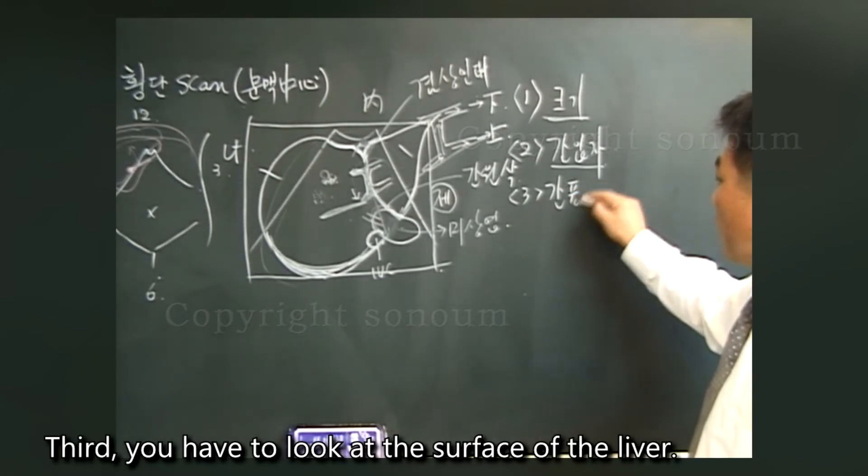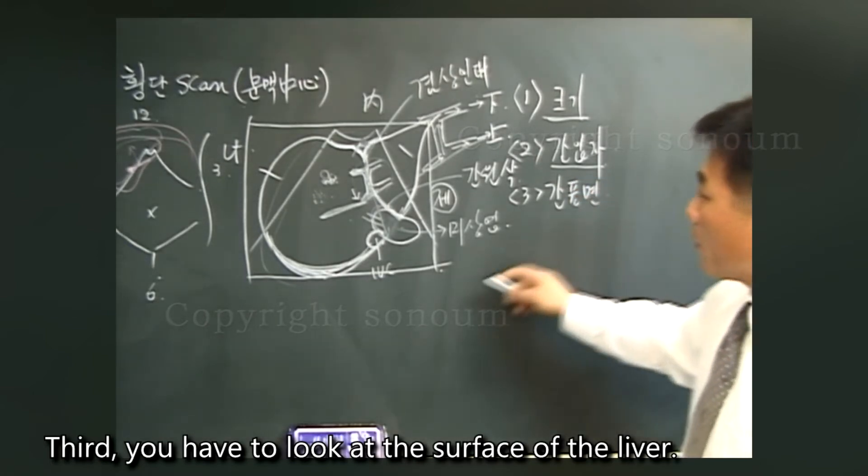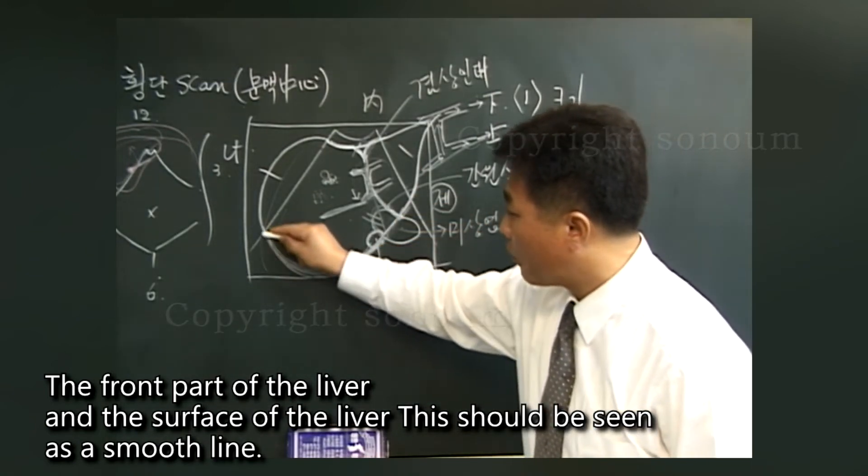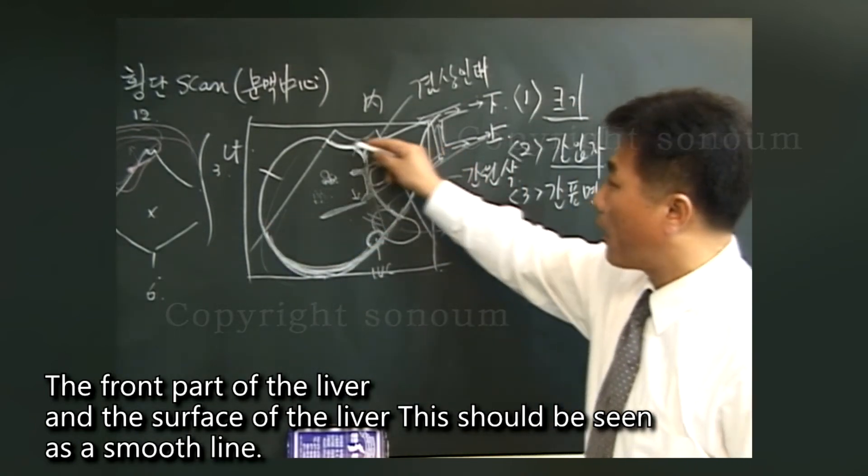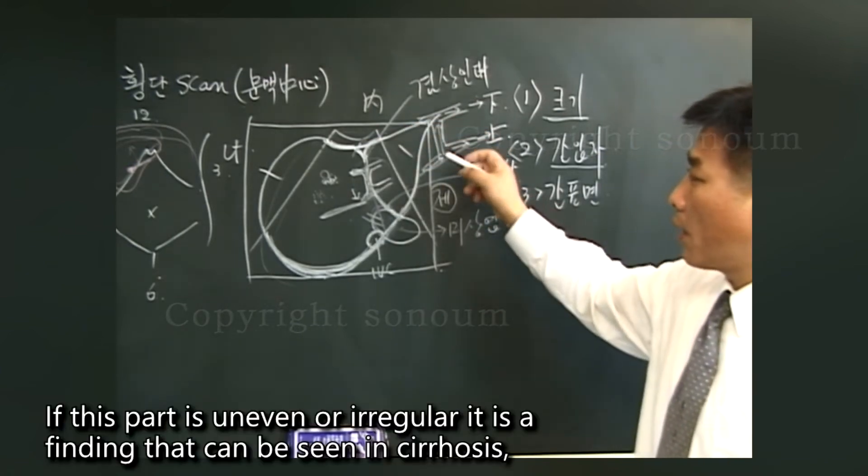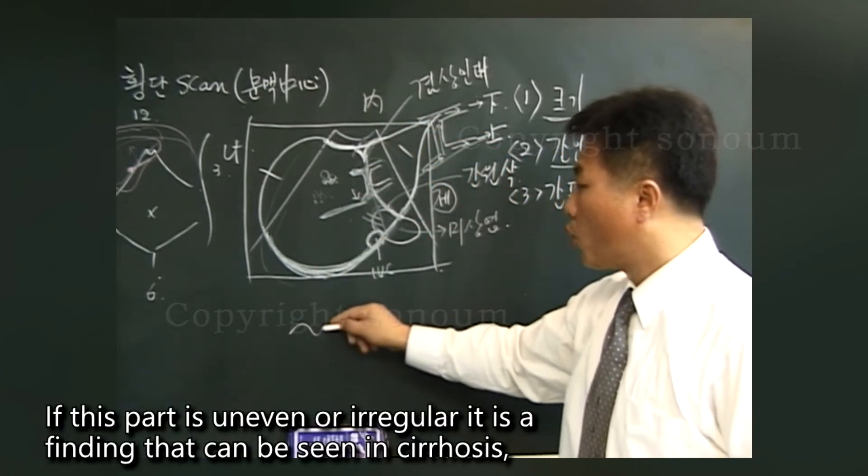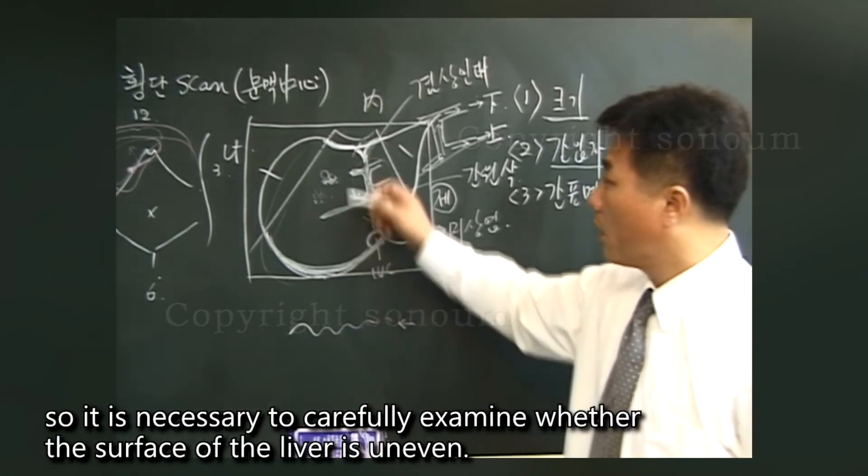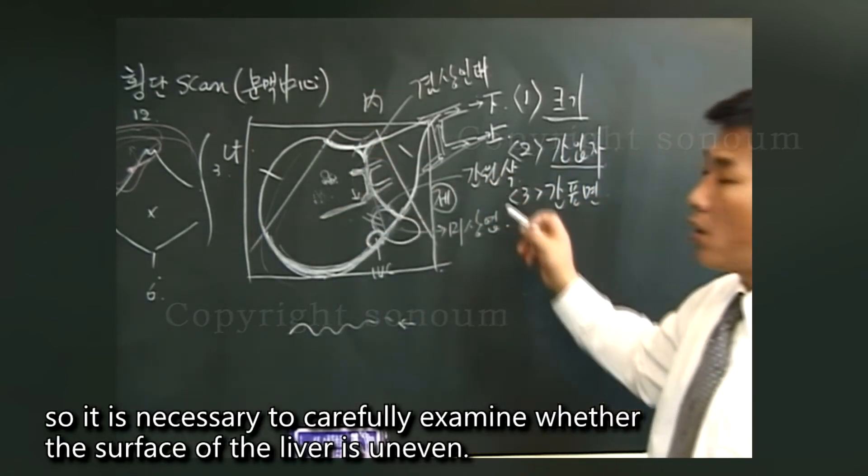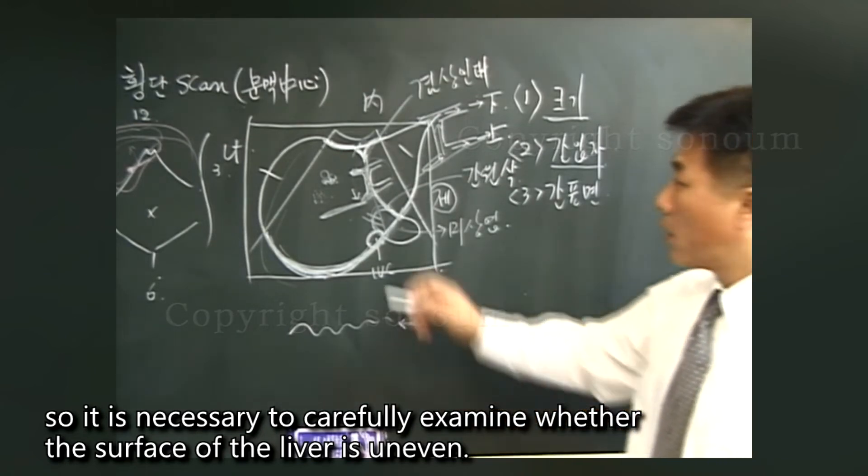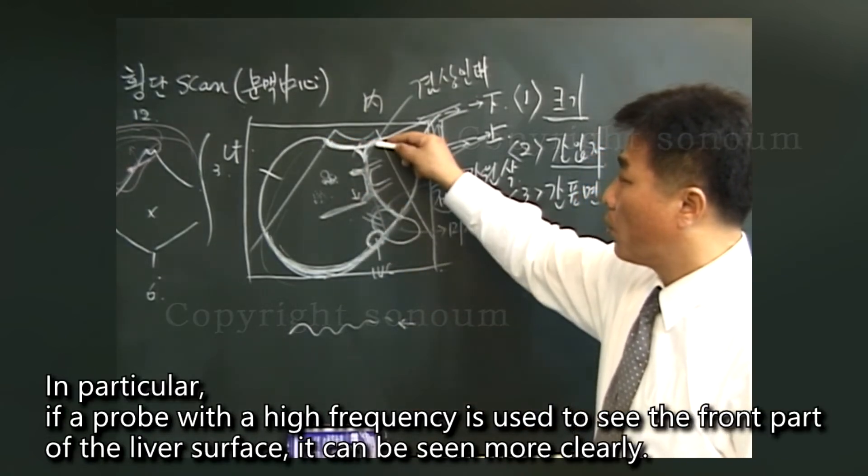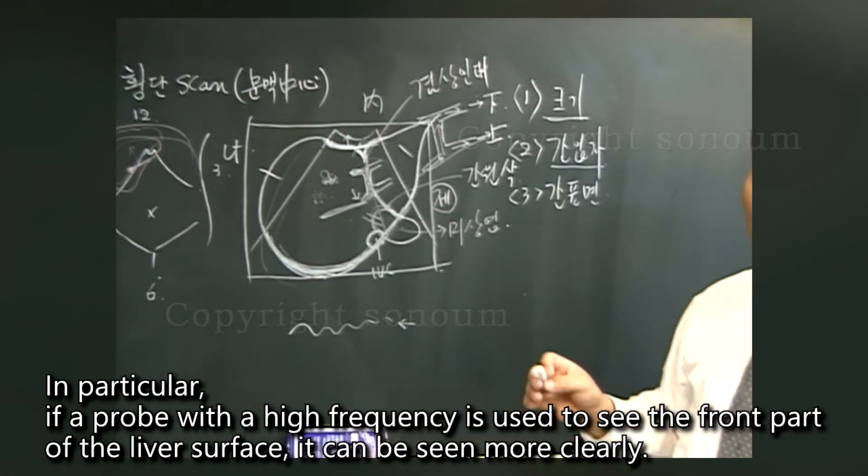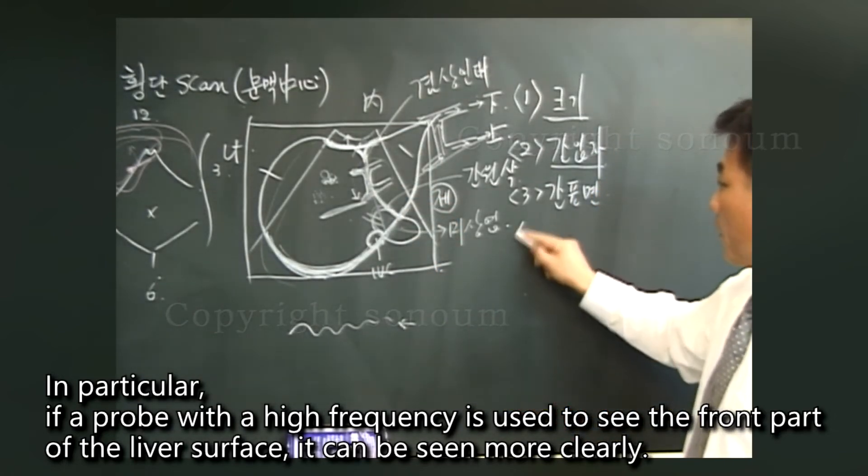Third, you have to look at the surface of the liver. The front part of the liver and the surface of the liver should be seen as a smooth line. If this part is uneven or irregular, it is a finding that can be seen in cirrhosis. So it is necessary to carefully examine whether the surface of the liver is uneven. In particular, if a probe with a high frequency is used to see the front part of the liver surface, it can be seen more clearly.